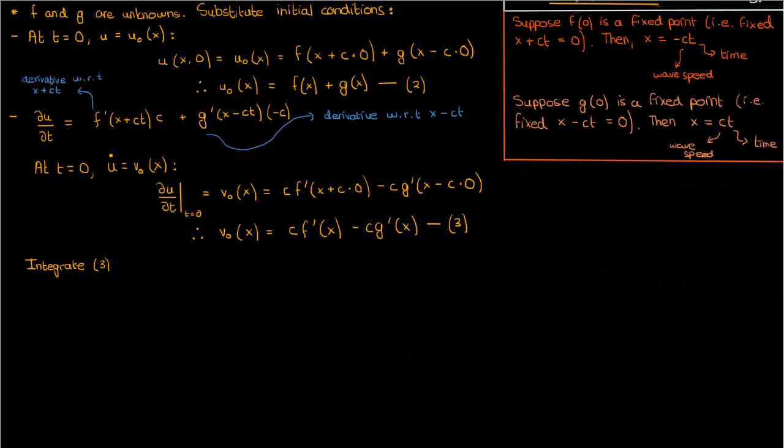The next step here is to integrate this equation 3. I'm going to perform a definite integration from some fixed initial point x0, it can really be any initial point, to a variable horizontal coordinate x. When we do that, when we integrate from x0 to x, these primed functions, f prime and g prime, just become their antiderivative non-primed counterparts. And we'll have the integral from x0 to x of v0 of s ds equals c times f of x minus f of x0 minus c of g of x minus g of x0.